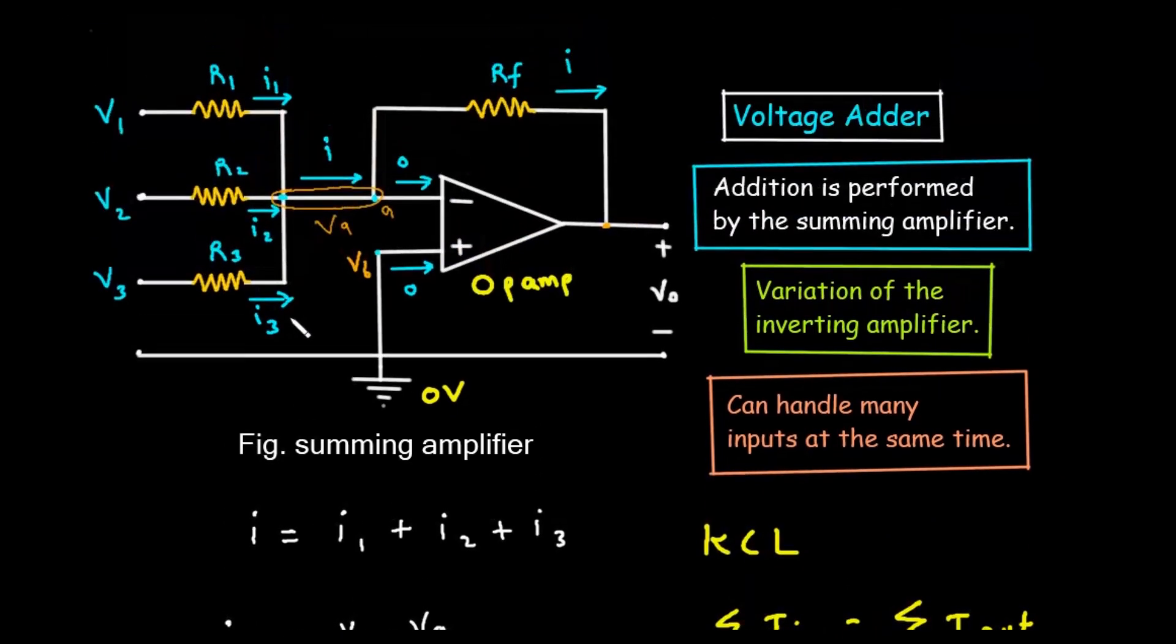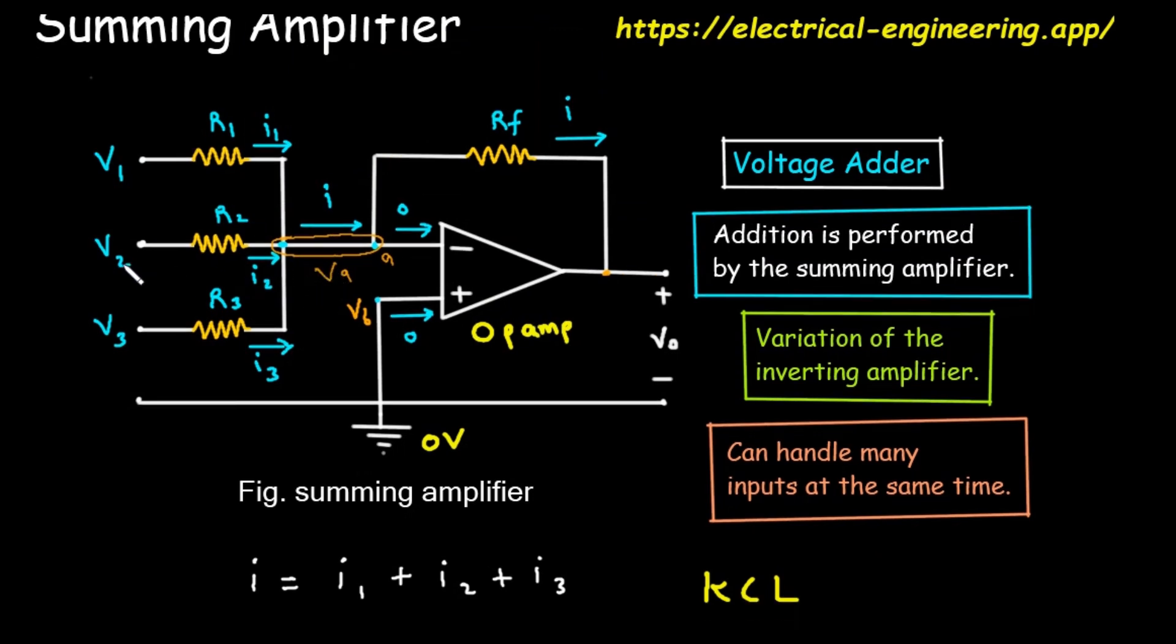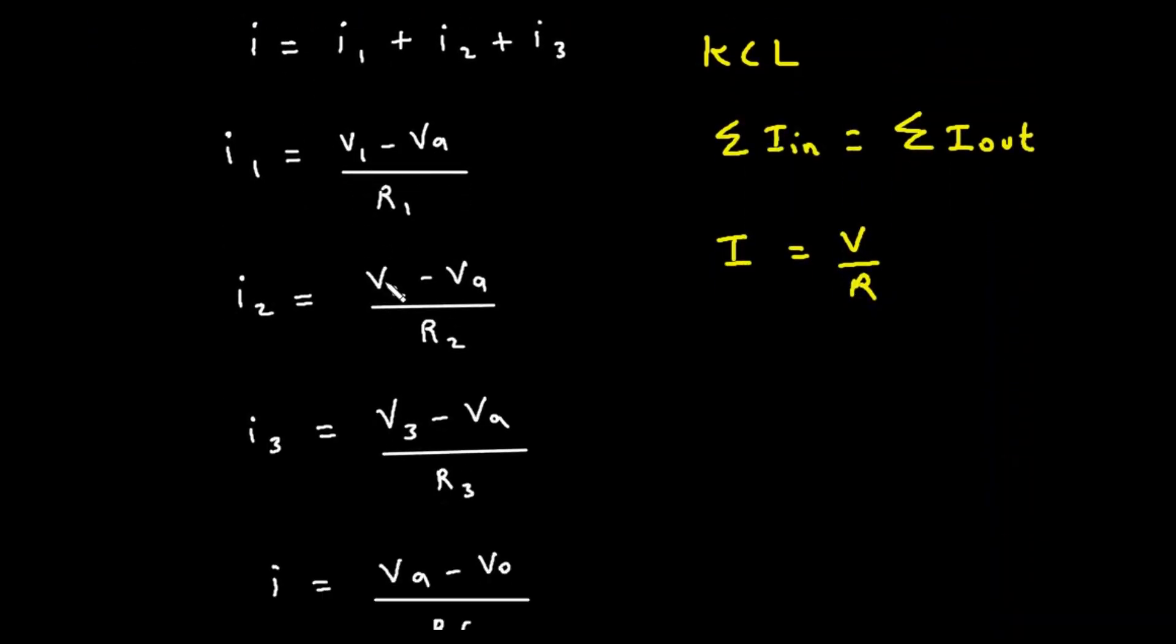Next, the current I2 flows through resistor R2. The voltage difference is V2 minus Vi. So, I2 equals (V2 minus Vi) divided by R2.